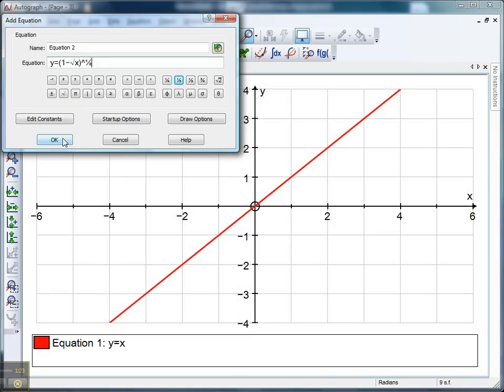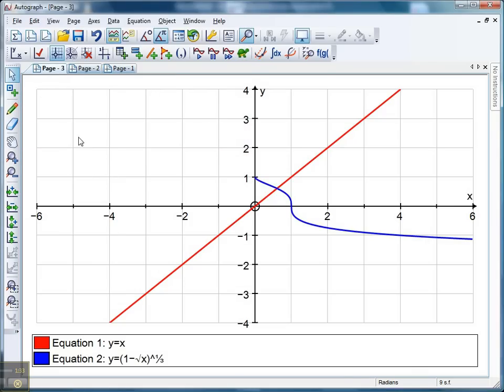Now the golden rule of Autograph, never ever ever click OK until you've discussed with the students what they think this is going to look like, what the key points are. And when you're happy, now we can click OK. Nasty looking equation.